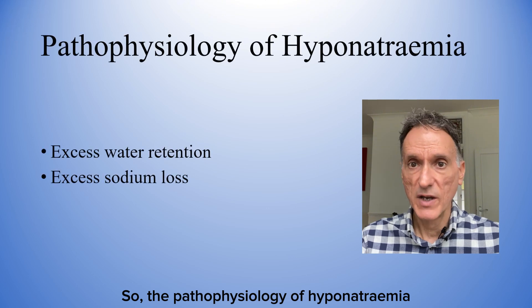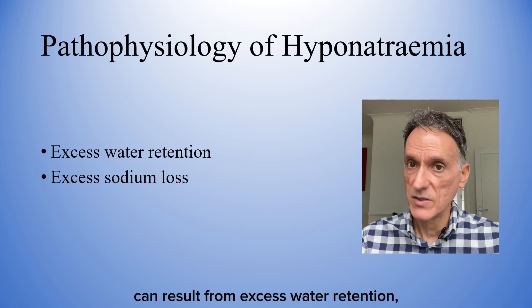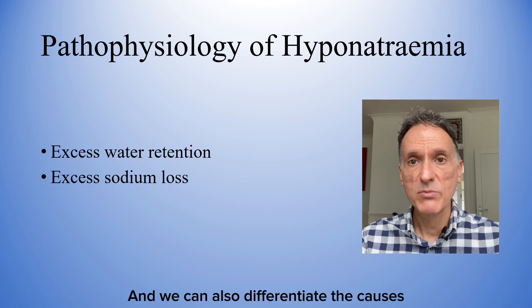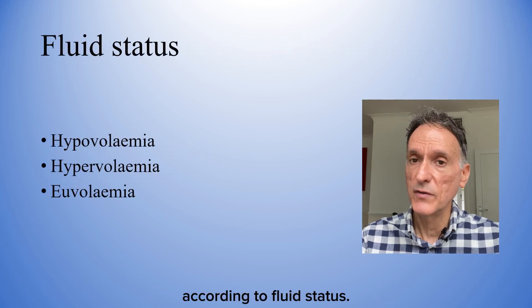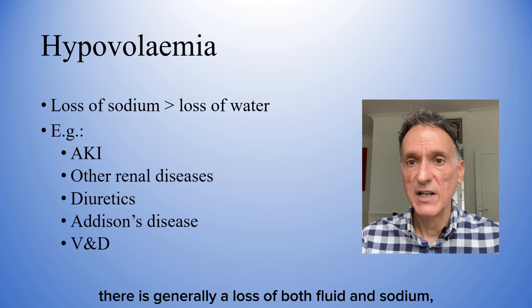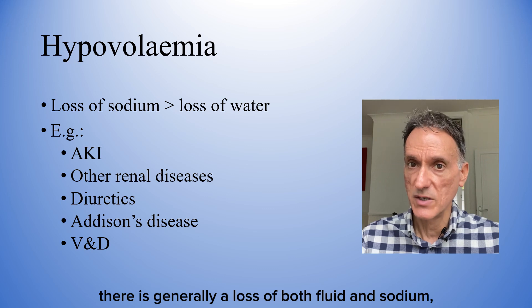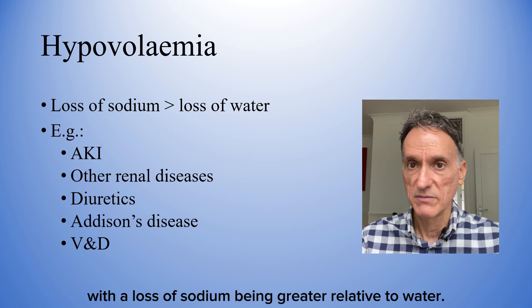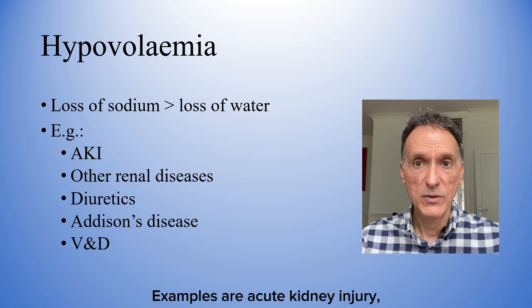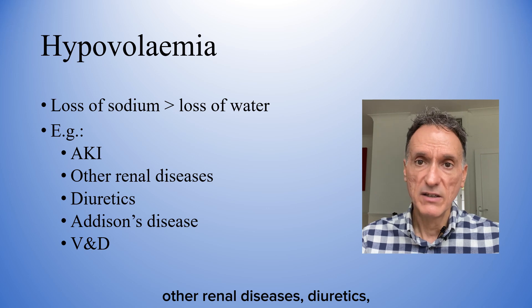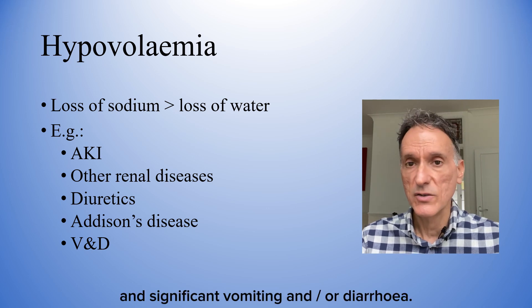The pathophysiology of hyponatremia can result from excess water retention or sodium loss, and we can differentiate the causes according to fluid status. In hypovolaemia, there is generally a loss of both fluid and sodium, with the loss of sodium being greater relative to water. Examples are acute kidney injury, other renal diseases, diuretics, Addison's disease, and significant vomiting and/or diarrhoea.